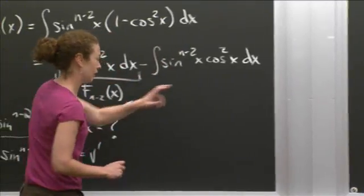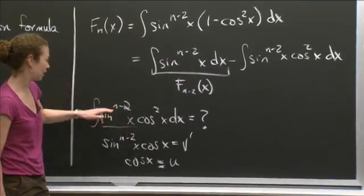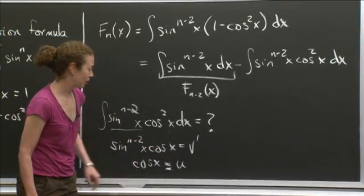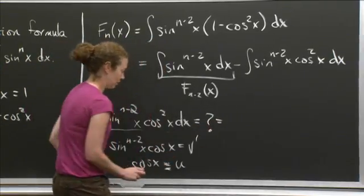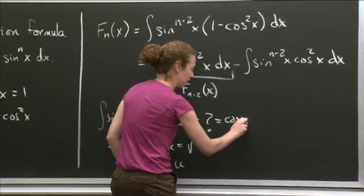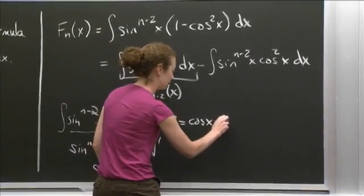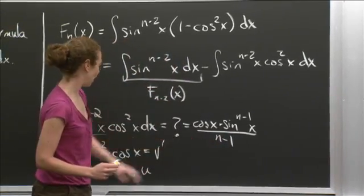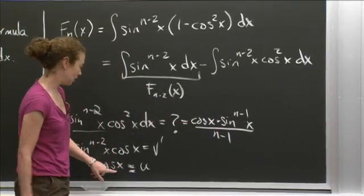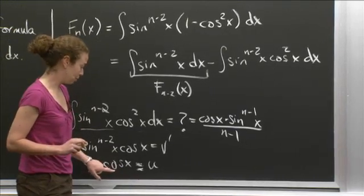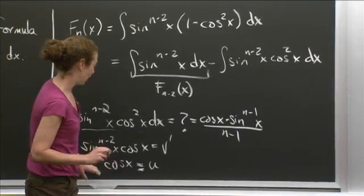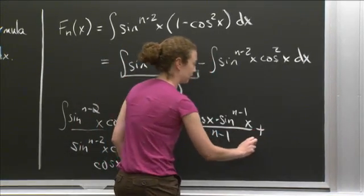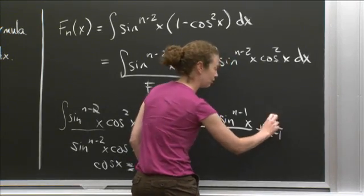I was integrating sine to the n minus 2 x cosine squared x dx using integration by parts. I've now calculated v and I know what du is. This equals u times v — cosine x times sine to the n minus 1 x over n minus 1 — and then I subtract v du. Since u is cosine x, u prime is negative sine x. When I subtract, the negatives combine to give a plus sign, and I get plus 1 over n minus 1 times the integral.